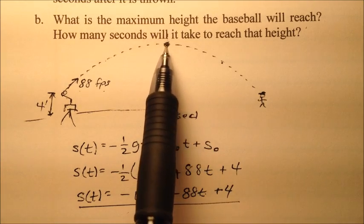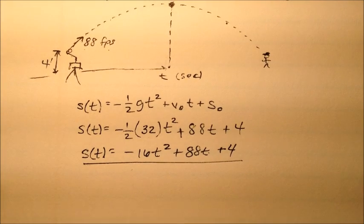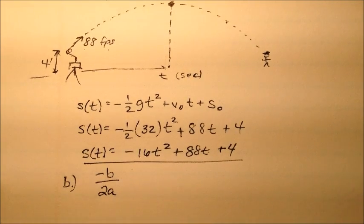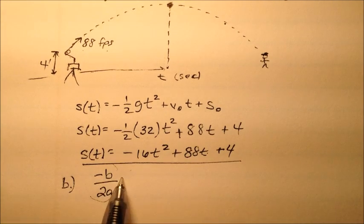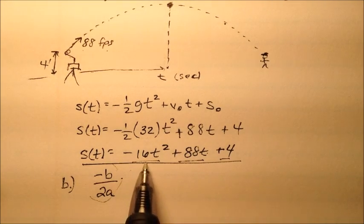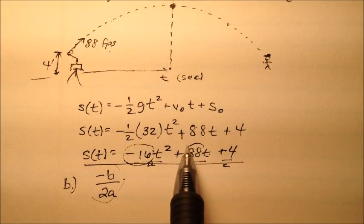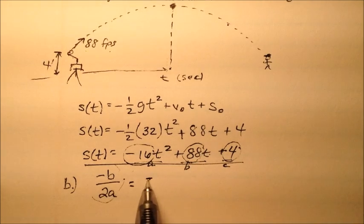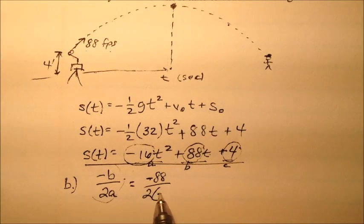How can we find the vertex of a parabola? We can find the t value using the formula -B/2A. This equation is in standard form. We have A = -16, B = 88, and C = 4. We can substitute into -B/2A. So -B is the opposite of 88, over twice the A value, which is -16.